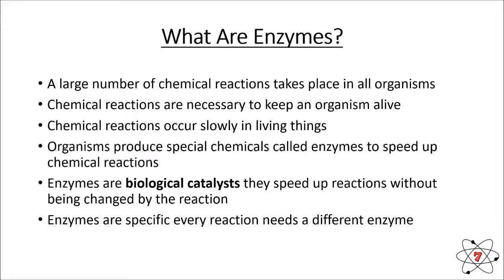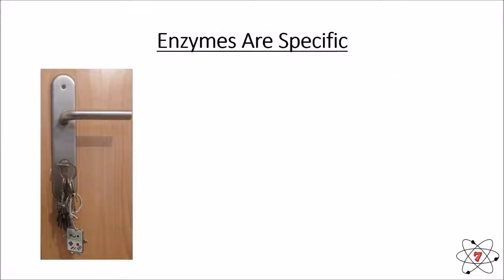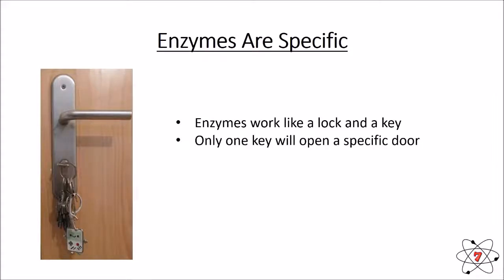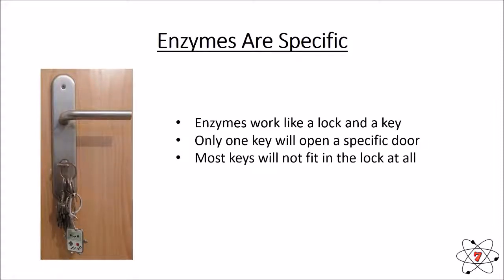Enzymes are very specific — there is not just one enzyme that speeds up every reaction. Every reaction has its own enzyme. We can think of enzymes as working like a lock and a key. If we have a door and lots of keys, only one key is going to be able to open a specific door. Having multiple keys means we can open multiple doors, but only one key will work on each door.